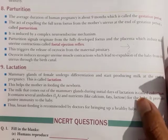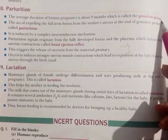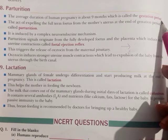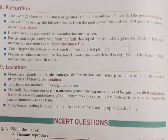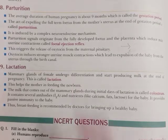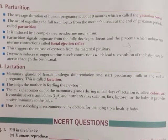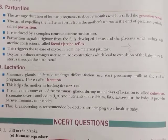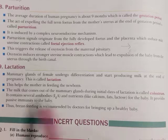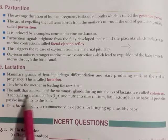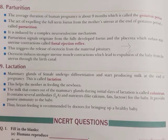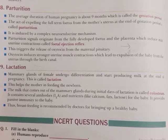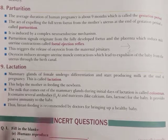The second topic is lactation. During the gestational period, there are many changes in the mammary glands — they develop and differentiate, and start milk secretion at the end of the gestational period. This helps the mother in feeding the newborn. The milk secreted from the mammary glands during the initial days of lactation, just after parturition, is called colostrum.